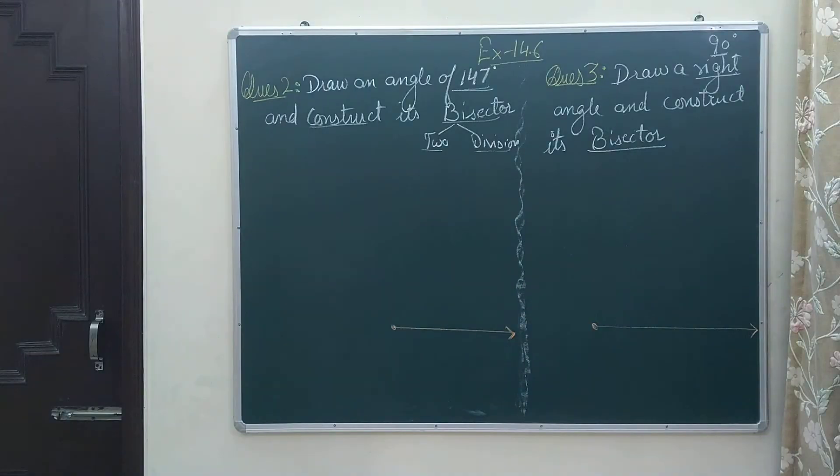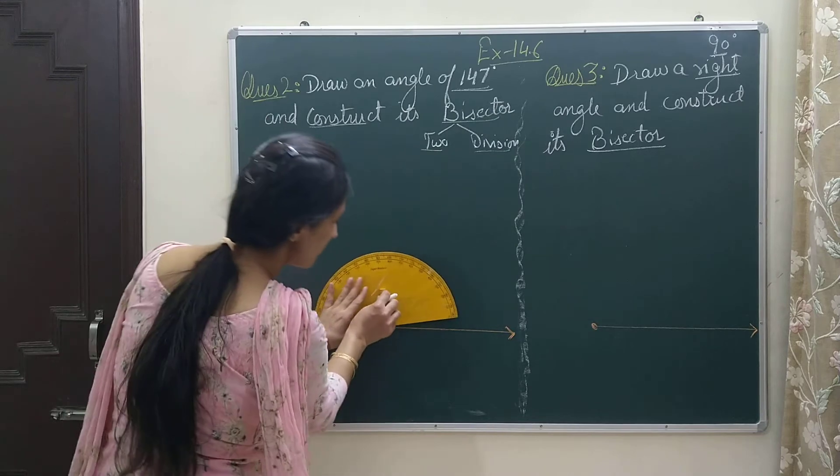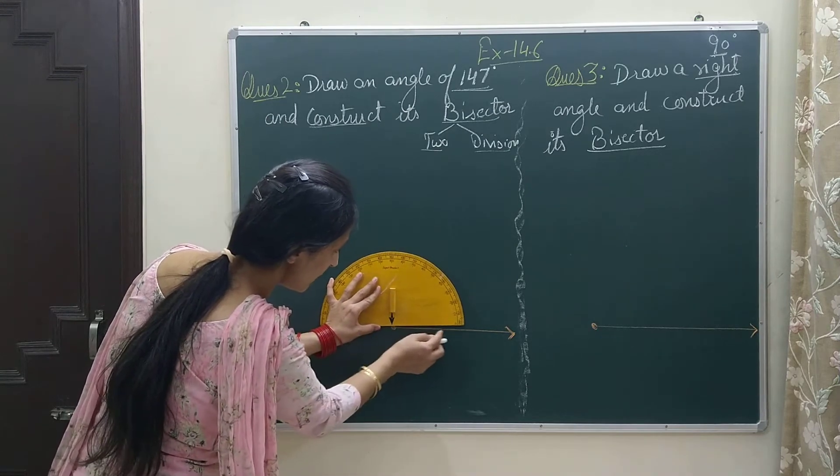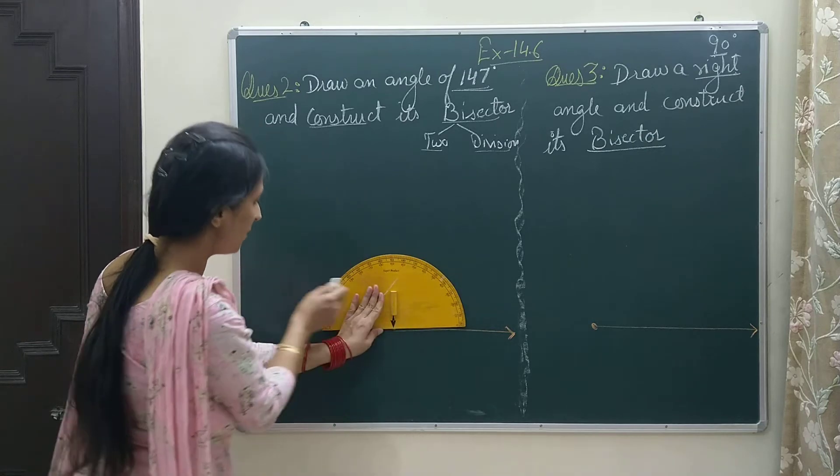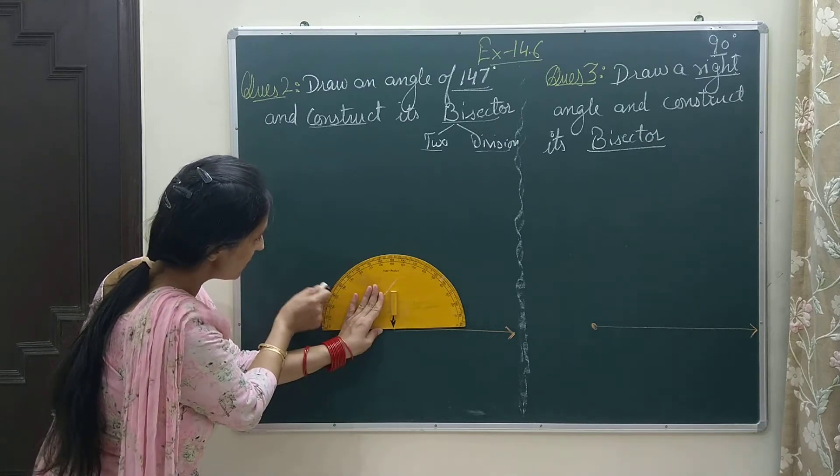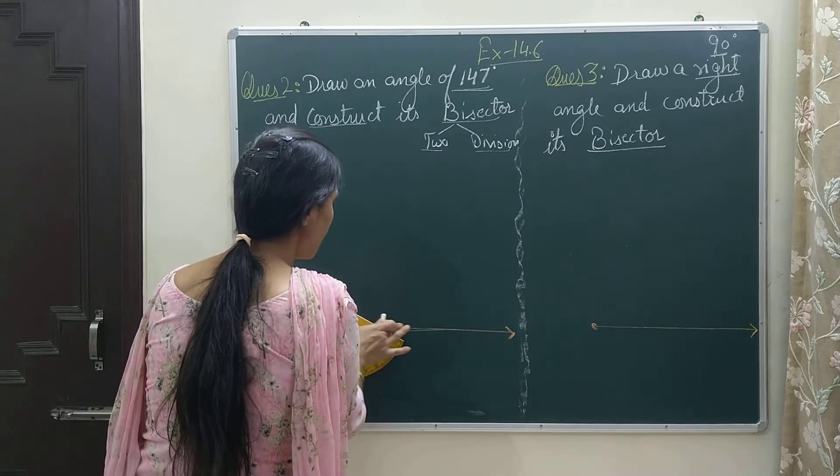So let us draw. I will keep my protractor here on the dot and then I will mark 147 here. And then I will join it, and I have got a 147-degree angle.